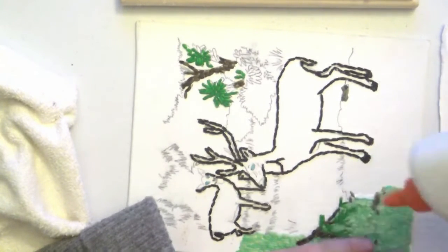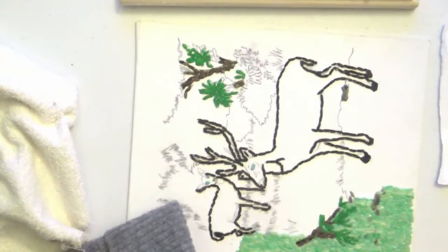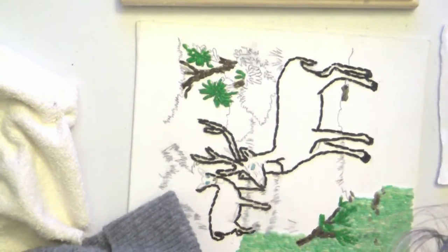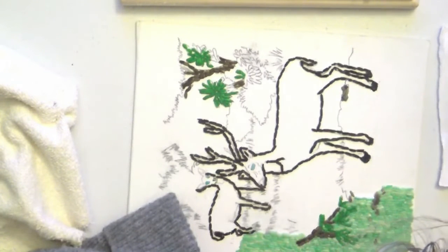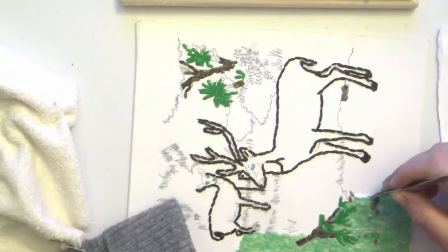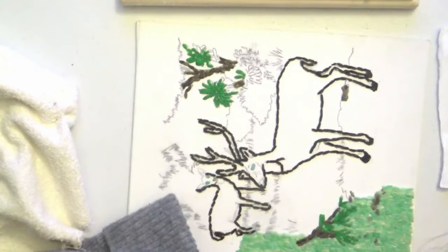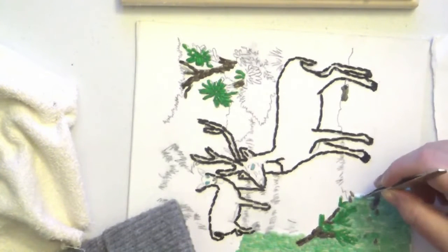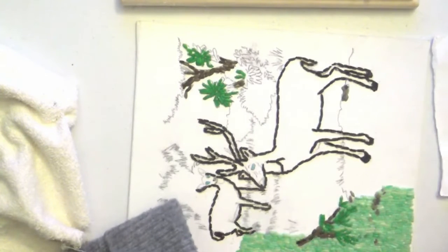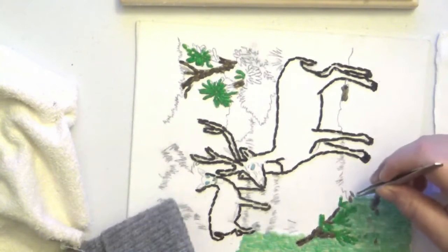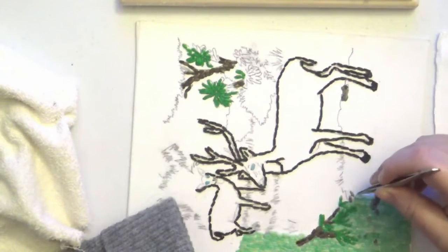Now this one happens to be canvas. The glue sticks as well to this one as it does to the boards. This one, however, if you make a mistake, you cannot correct it as far as I have found. This is only my second canvas. So I'm sure that there might be a way, but I'm not 100% positive because I know you can't sand it. I know that for a fact because it will ruin the canvas.